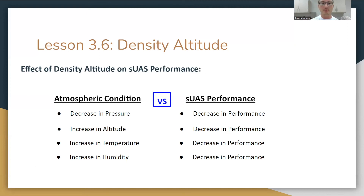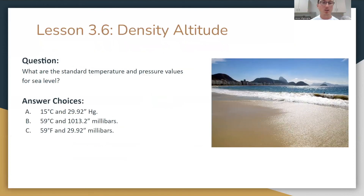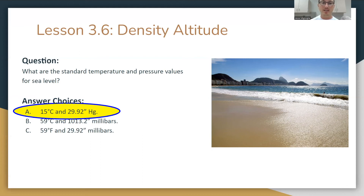Practice question: What are the standard temperature and pressure values for sea level? Pause the video and answer. The answer is 15 degrees Celsius and 29.92 HG. This is pretty likely to appear on the exam — either asking for standard values directly, or asking what drone manufacturers base the standard day temperature and pressure on. Just make a flashcard and memorize this one.